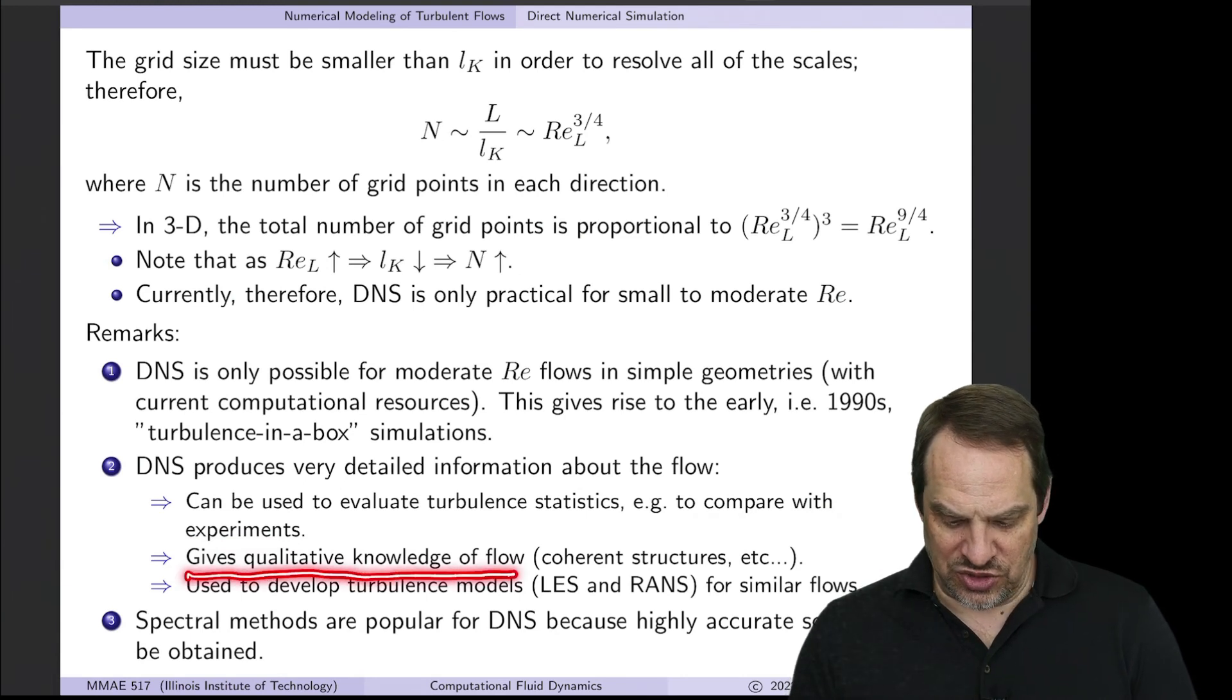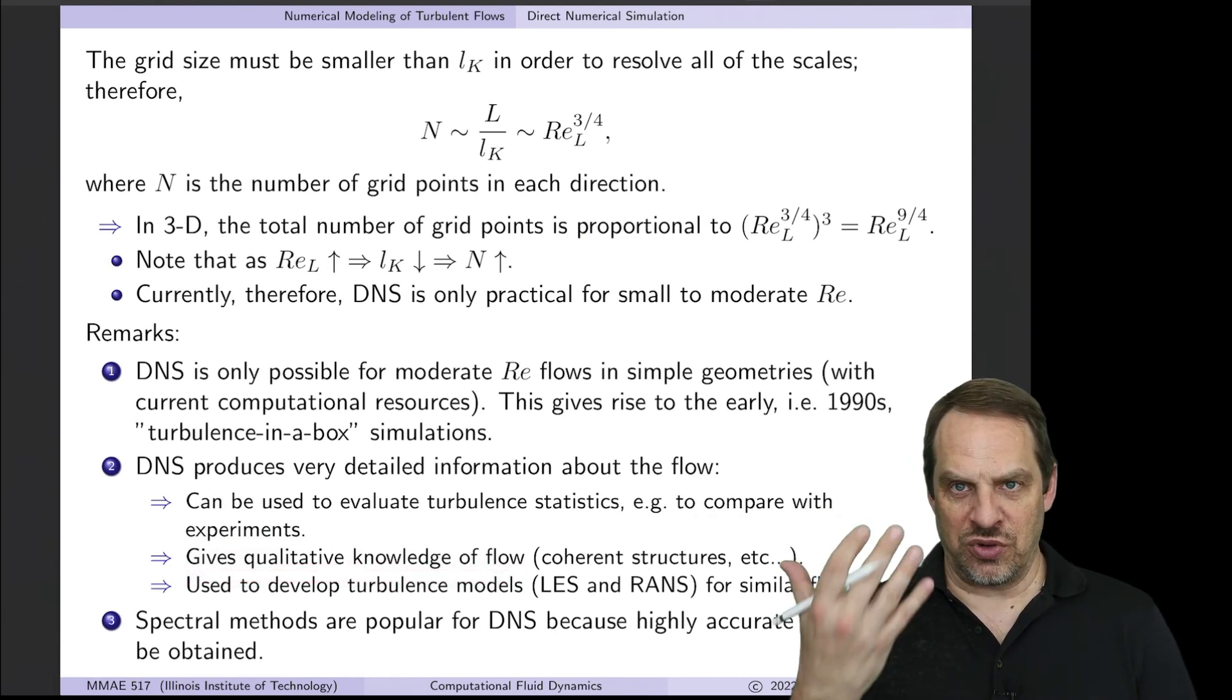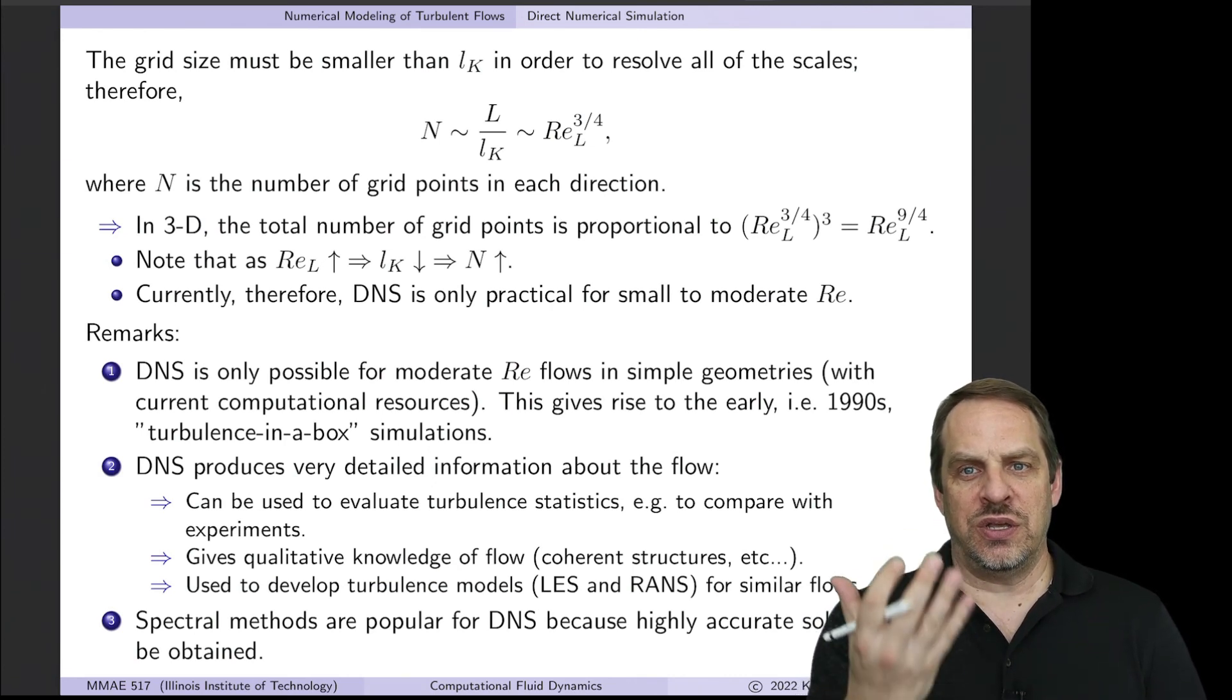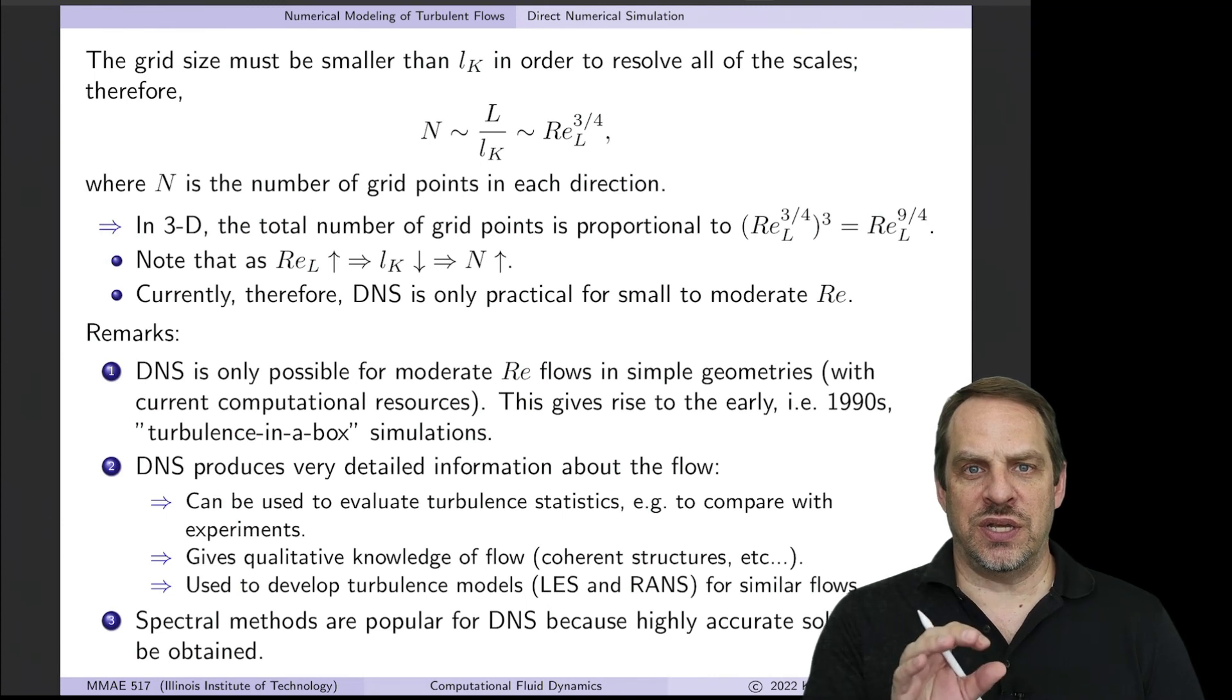It gives qualitative knowledge of the flow. So again, if there are coherent structures, if there are these vortical structures that appear and evolve, you will see them. They are there in the DNS. It's not getting lost.